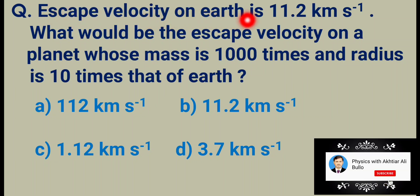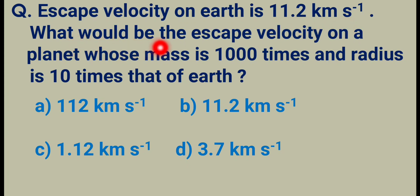Escape velocity on Earth is 11.2 km per second. What would be the escape velocity on a planet whose mass is 1000 times and radius is 10 times that of Earth? Options: a) 112 km per second, b) 11.2 km per second, c) 1.12 km per second, d) 3.7 km per second.